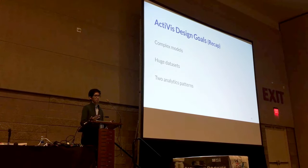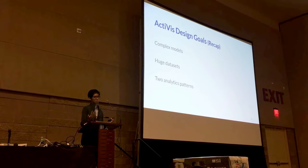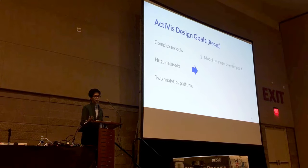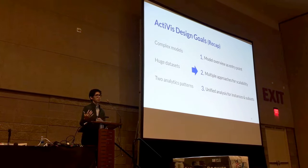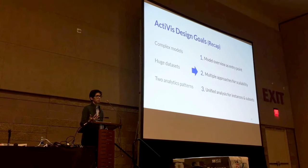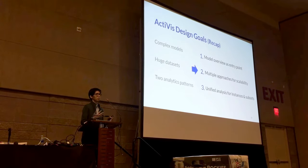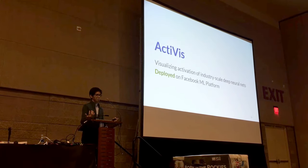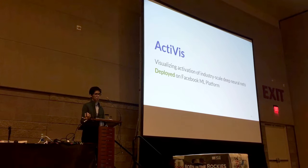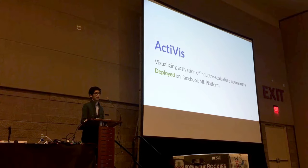To summarize the challenges from our design sessions — models are complex, datasets are huge, and there are two analysis patterns — we set three main design goals: first, to add a model overview as an entry point to detailed activation; second, to use multiple approaches to address scalability; and third, to have a unified analysis supporting both instance-level and subset-level analysis. Based on that, we developed Activist with Facebook researchers and engineers, a visualization of activations for deep learning models deployed on their machine learning platform.